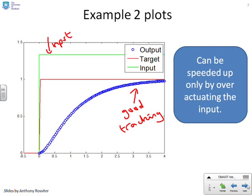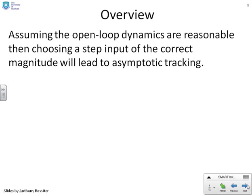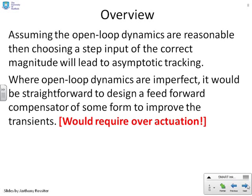The input has gone straight to steady state. So the only way you could speed this output up would be by using larger inputs, by overactuating, and in general you might not want to do that. Simple overview: if you assume the open-loop dynamics are reasonable, then choosing a step input of the correct magnitude gives you asymptotic tracking. Where the open-loop dynamics are imperfect, you could design a slightly more complex feedforward to modify the transients, but that might require overactuation. So you're saying, why do we need feedback? What you've just shown me is that open-loop control tends to do quite a good job. Why introduce feedback at all?